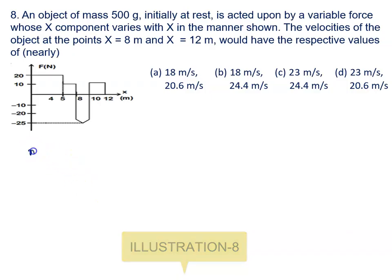An object of mass 500 grams, that is 1/2 kilogram, initially at rest with initial velocity zero, is acted upon by a variable force whose x component varies with x in the manner shown in the diagram. The velocity of the object at the points x = 8 m and x = 12 m would be respectively...